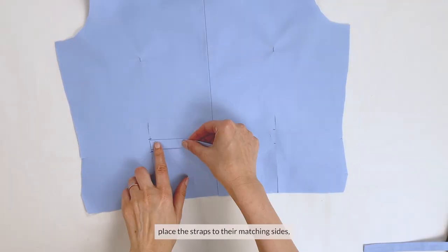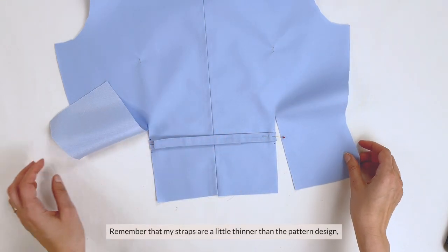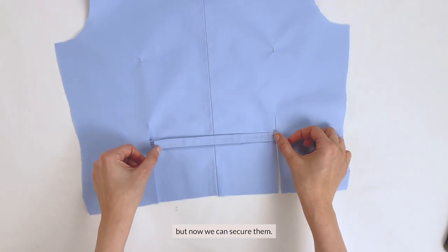Right where our marks are, place the straps to their matching sides, the longer strap to the right side. Remember that my straps are a little thinner than the pattern design, but now we can secure them.